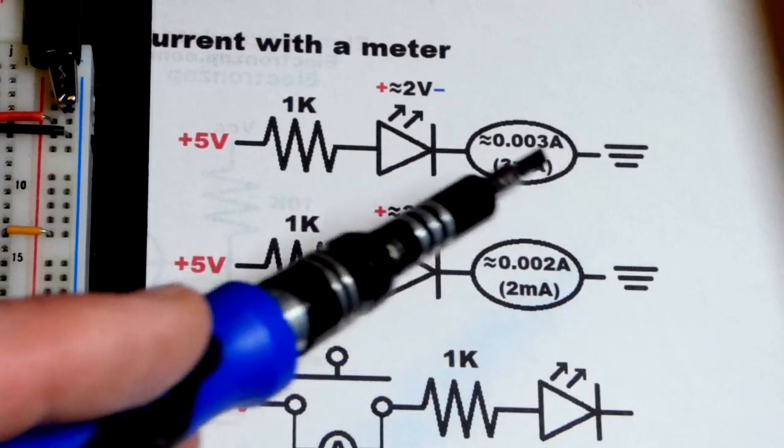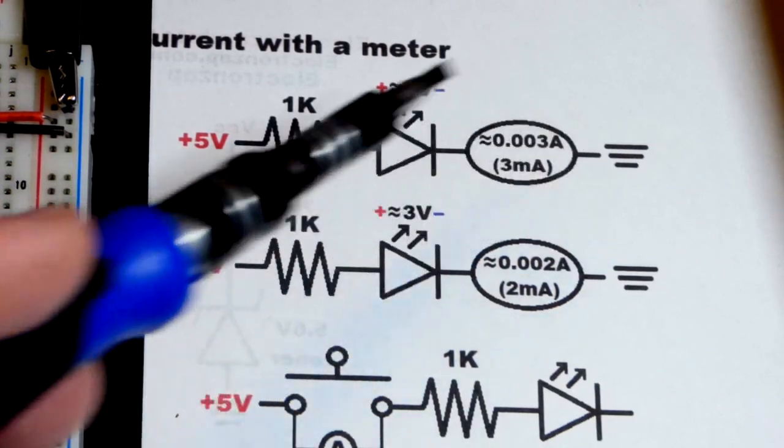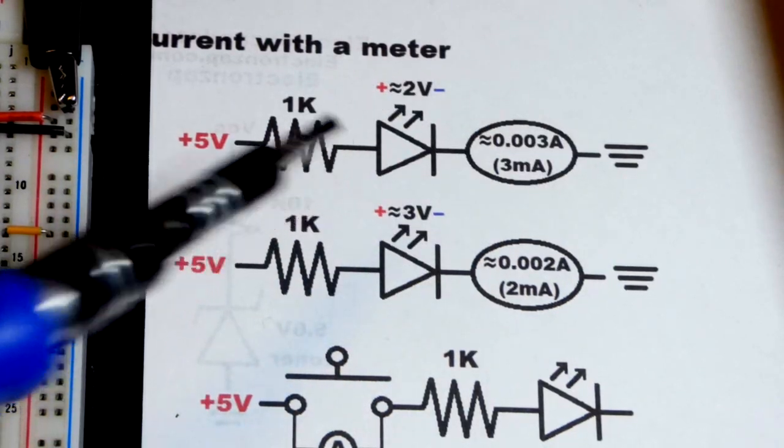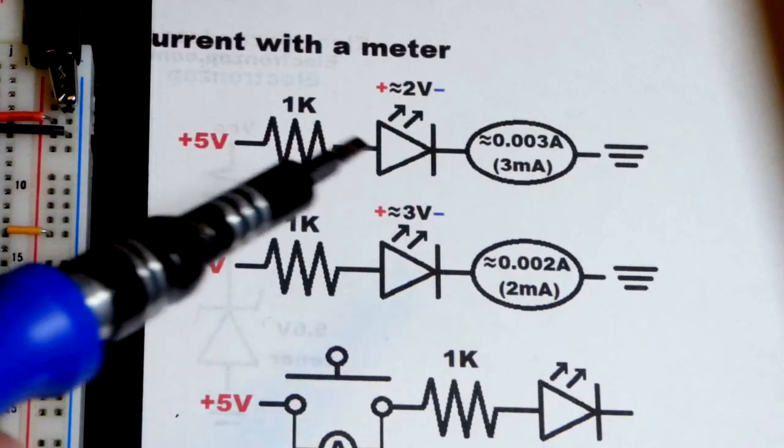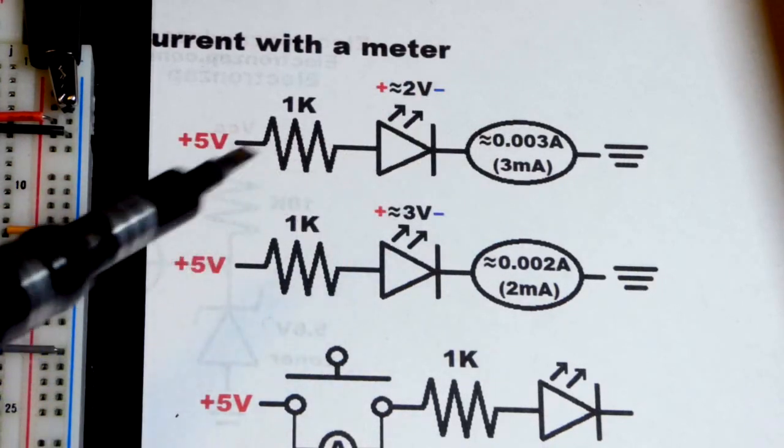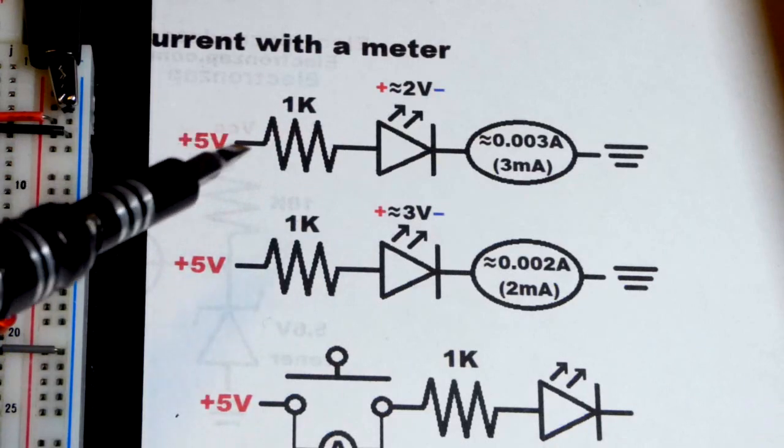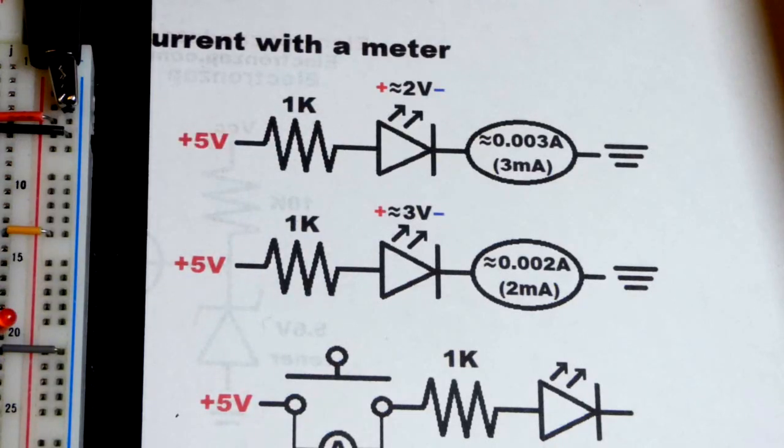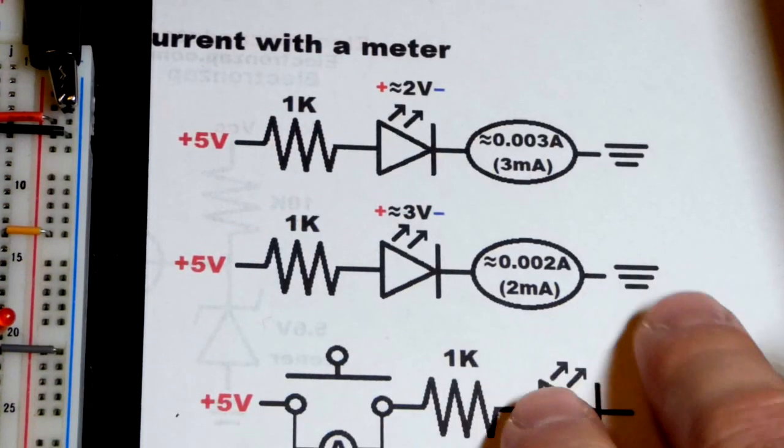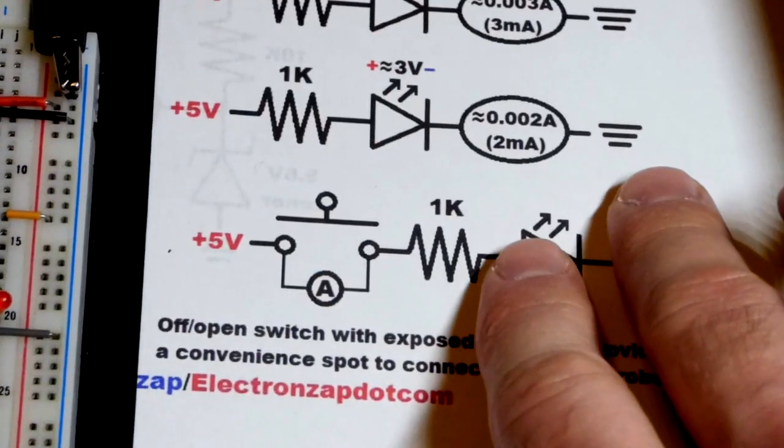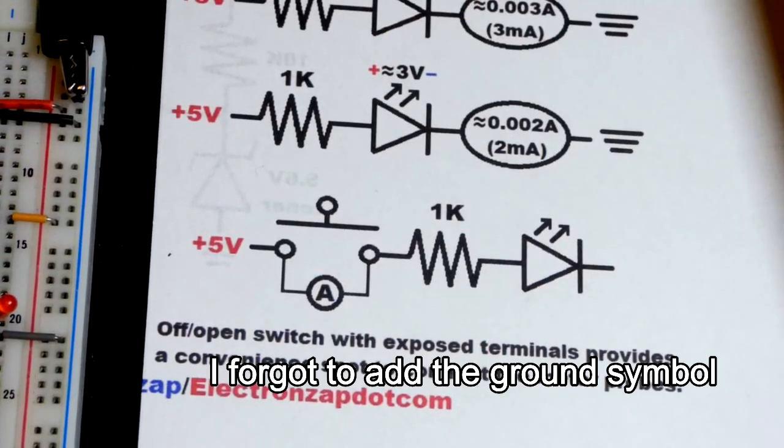Now you'll remember I accidentally measured from the negative supply to the resistor right there. And so there was no diode dropping voltage from the resistor. We had five milliamps. We had the full five volts across there. So I did that by accident. But it was actually probably a good thing to do for this video anyways.